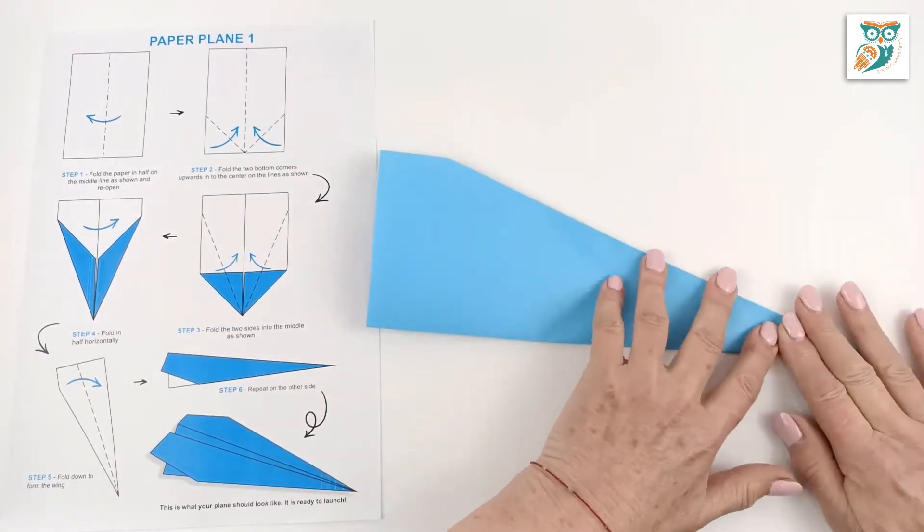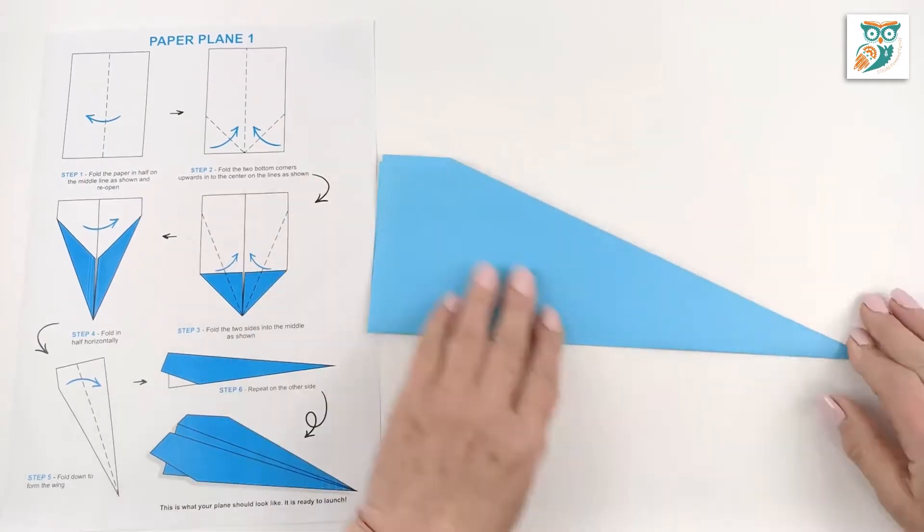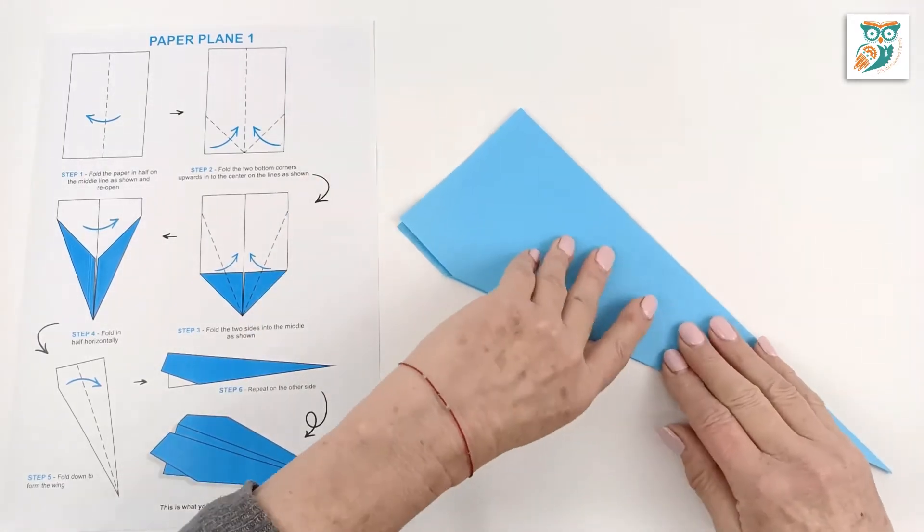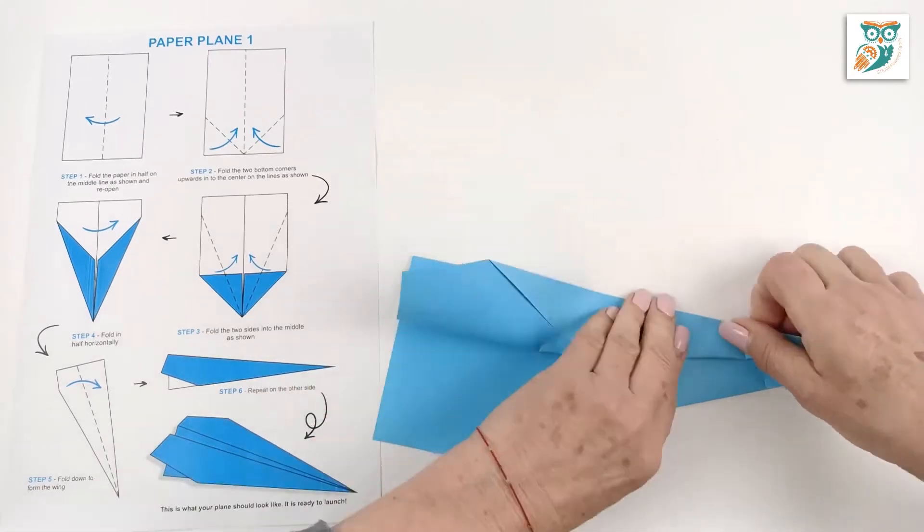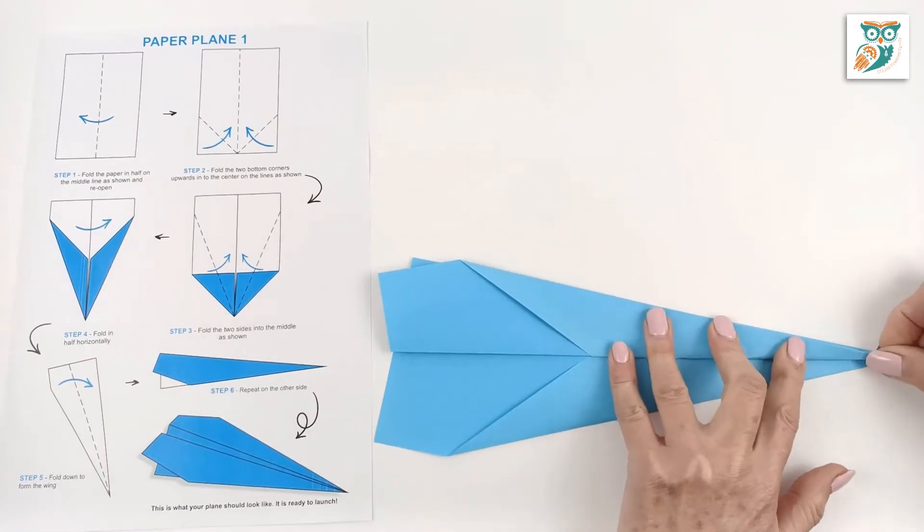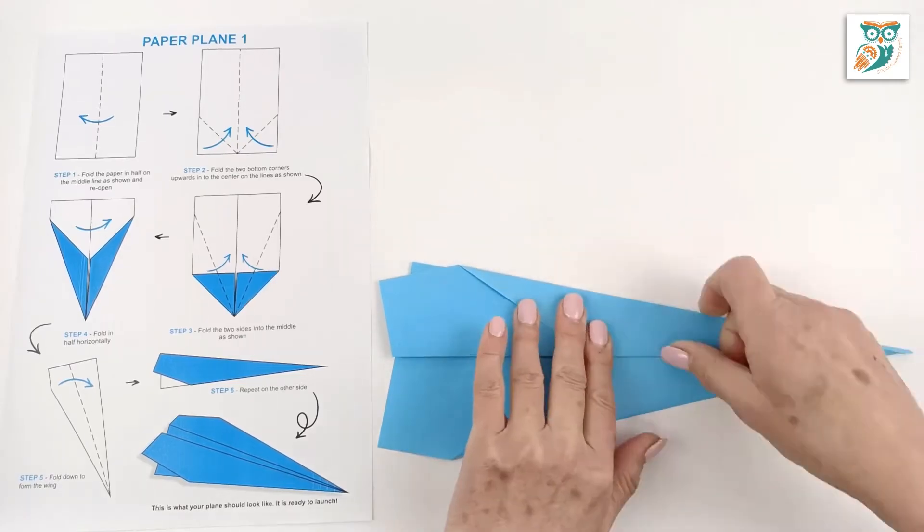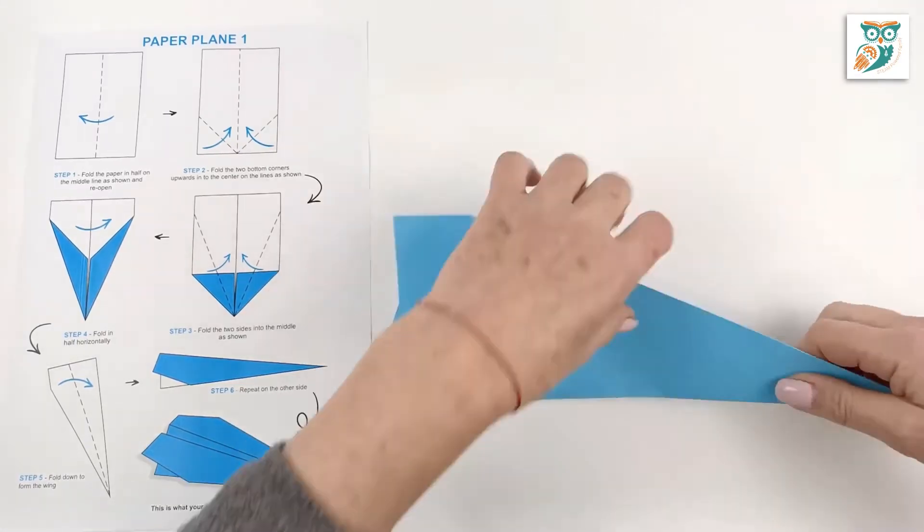Now fold it over so you've got it nicely in half and then grab each side and fold it down to create your wings. Another tip here is to make sure that when you fold your wings and you open it back up again that they're angled up. This helps with stability when flying.